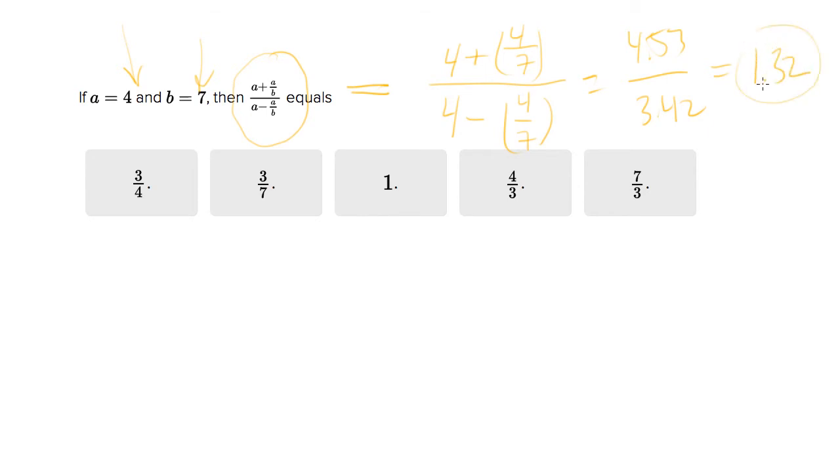So we're looking for an answer choice which matches 1.32. So 1 is too small. Anything less than 1 is too small. 7 over 3 is way too big. So 4 thirds is the only thing that remains. If you want, plug 4 thirds into your calculator as a double check.